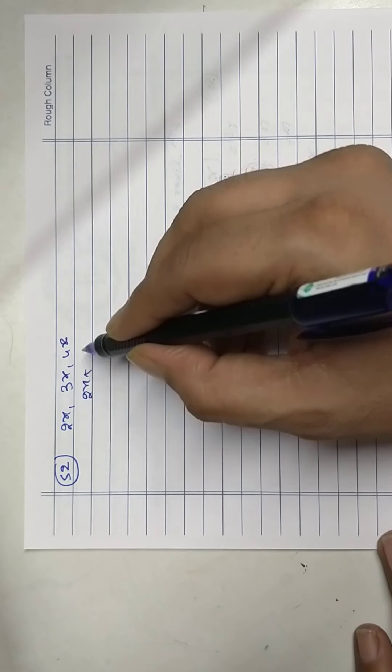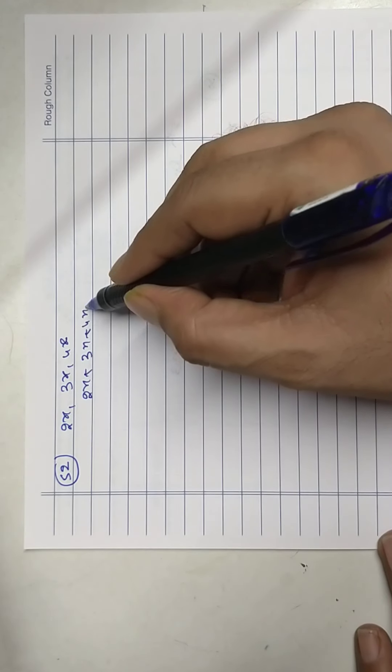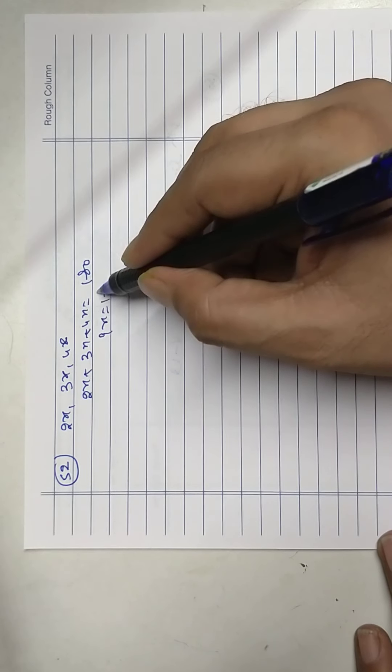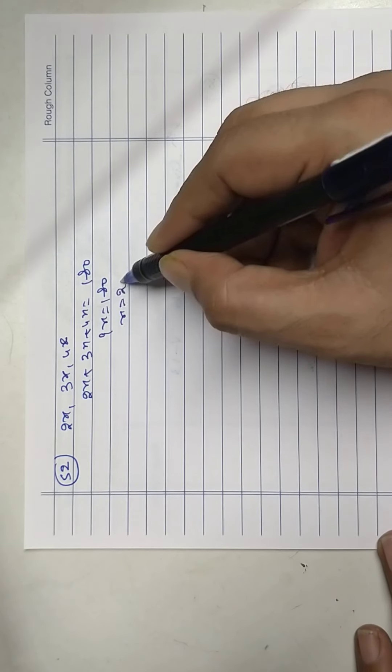Sum of angles of triangle is 180. So 2x plus 3x plus 4x equals to 180. 9x equals to 180. X equals to 20.